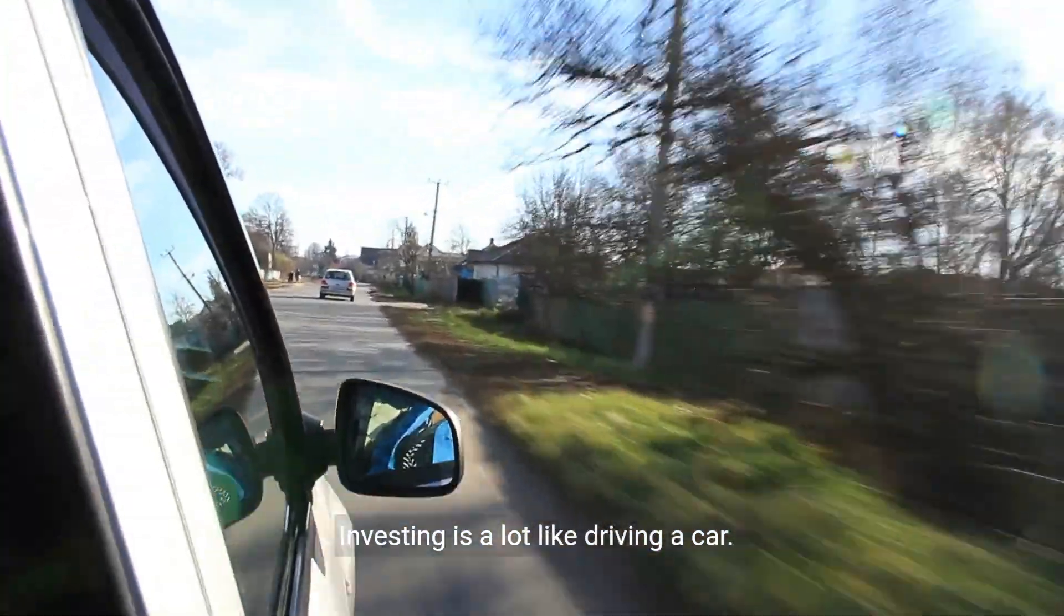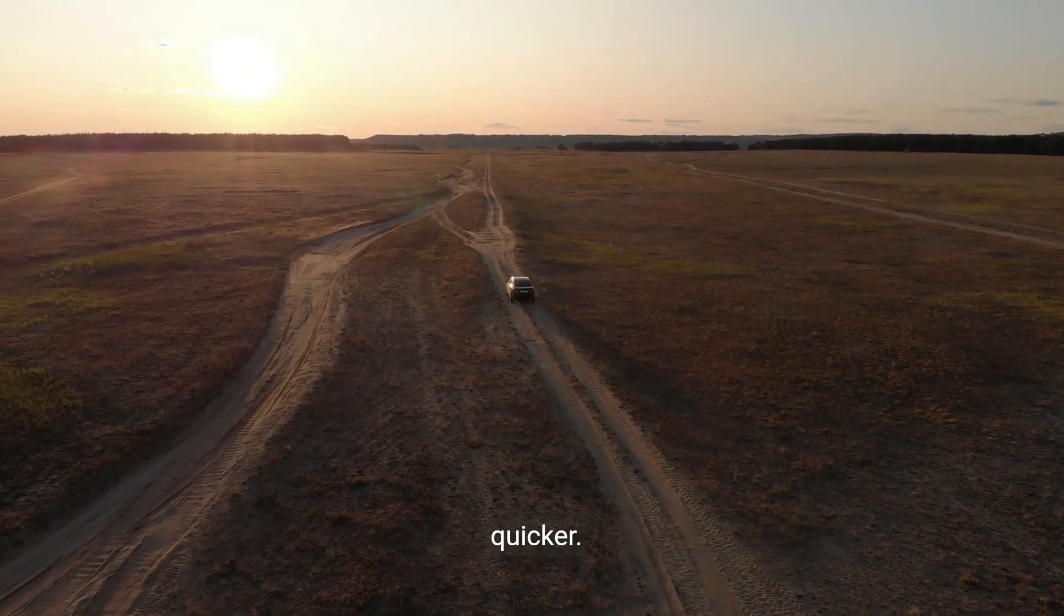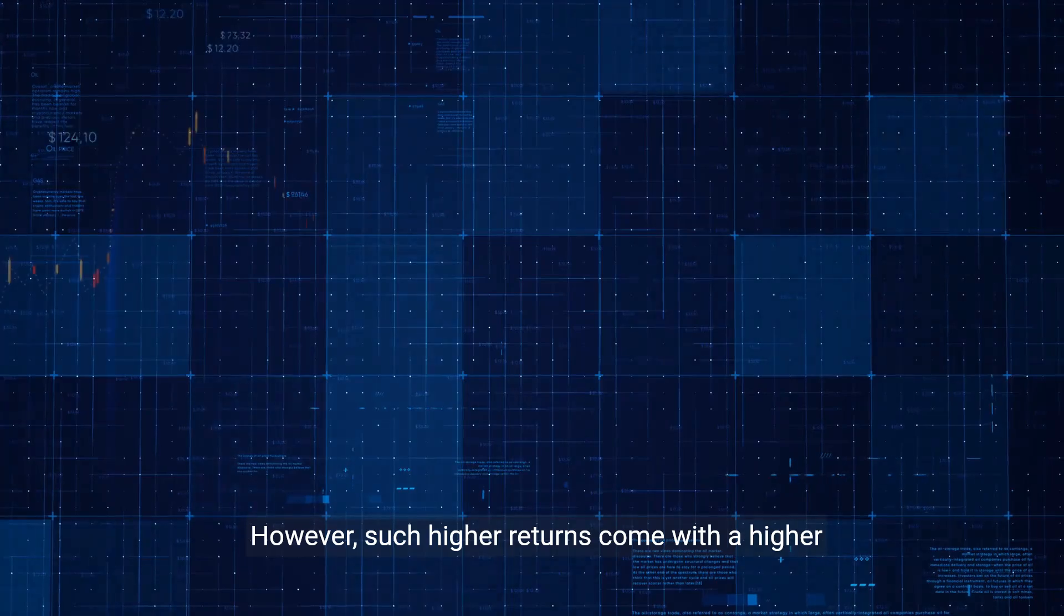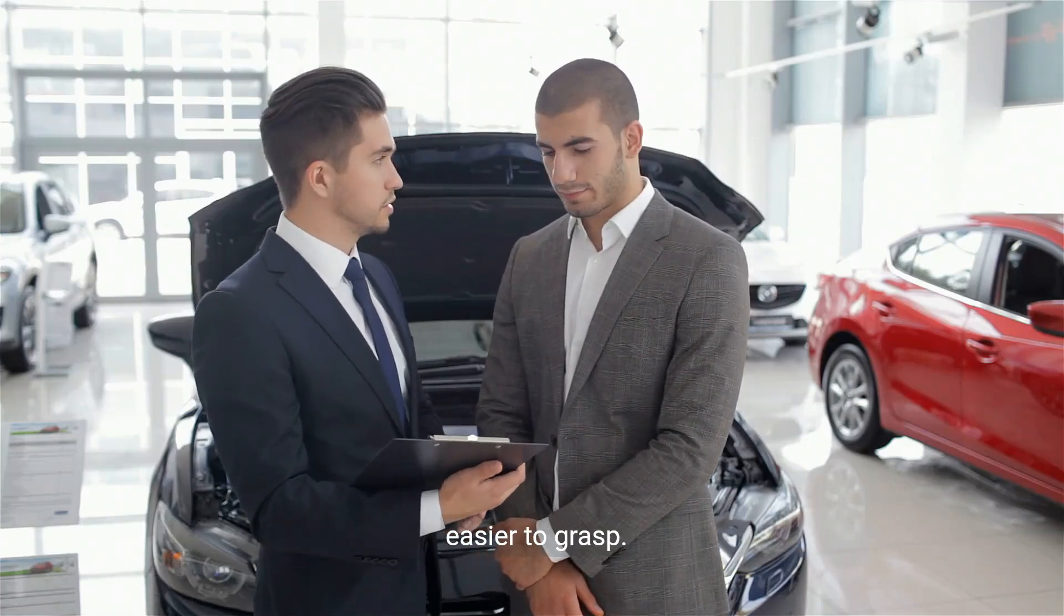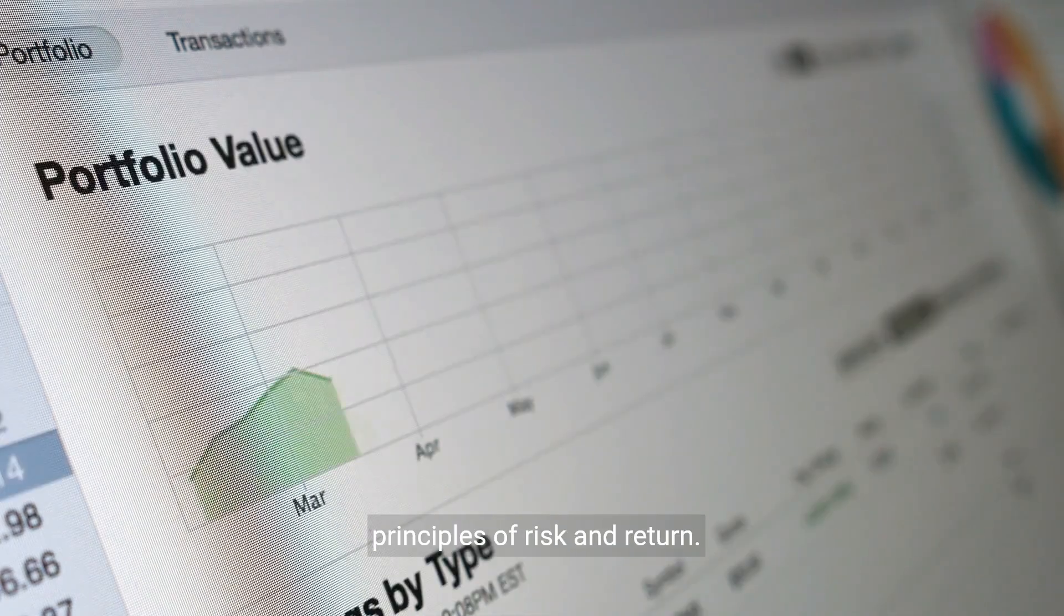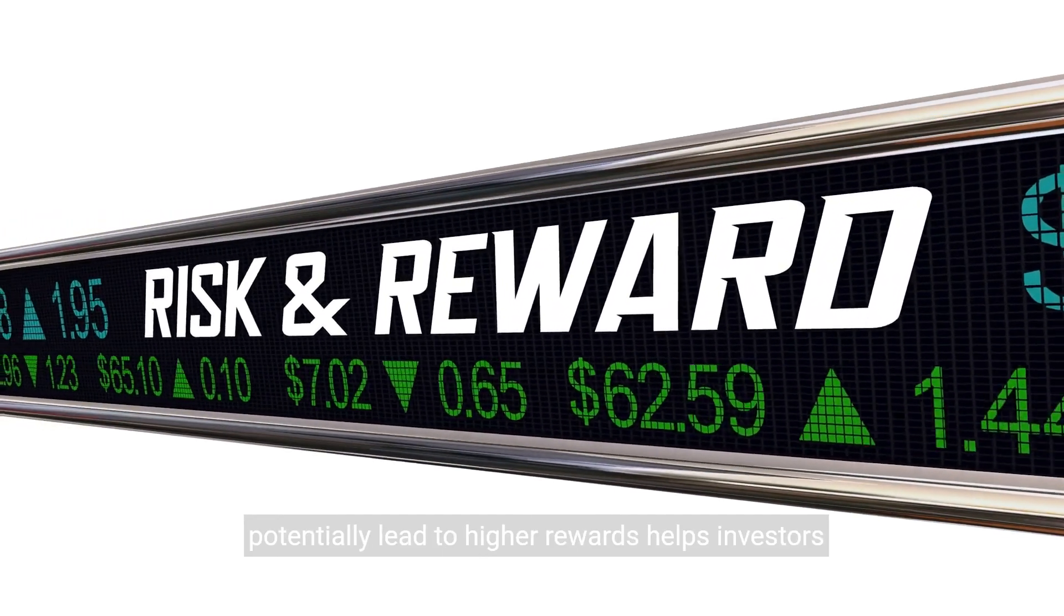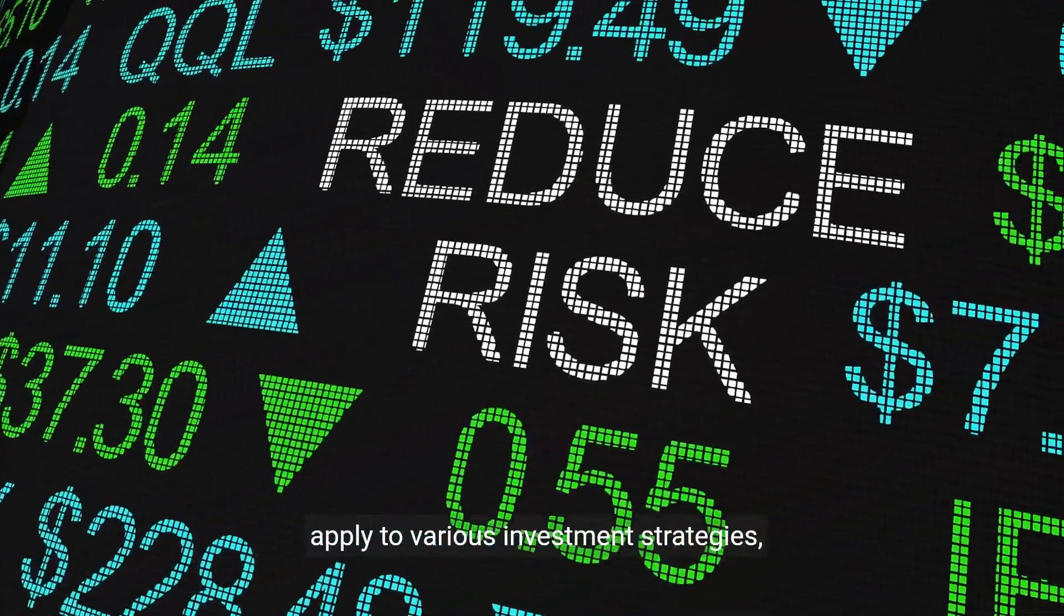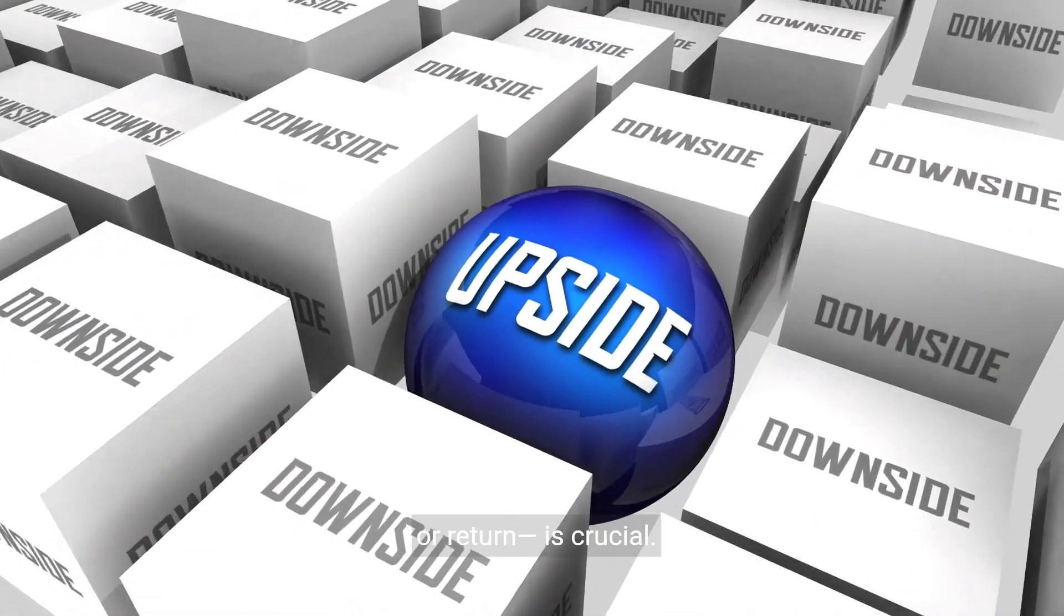Investing is a lot like driving a car. The faster you drive, the higher the risk of an accident. But at the same time, you get to your destination quicker. Think of higher returns as reaching your financial goals faster. However, such higher returns come with higher risk. This analogy makes complex investment concepts easier to grasp. By using relatable comparisons, we can simplify the principles of risk and return. Understanding that taking on more risk can potentially lead to higher rewards helps investors make informed decisions. As we move forward, you'll see how this analogy can apply to various investment strategies and why balancing speed or risk against safety or return is crucial.